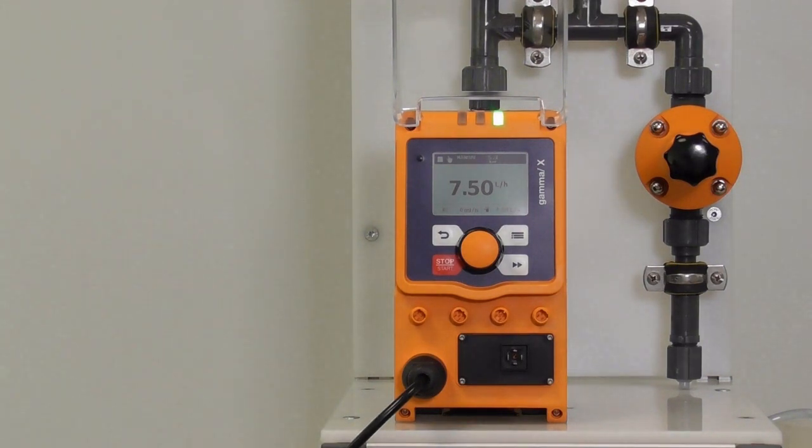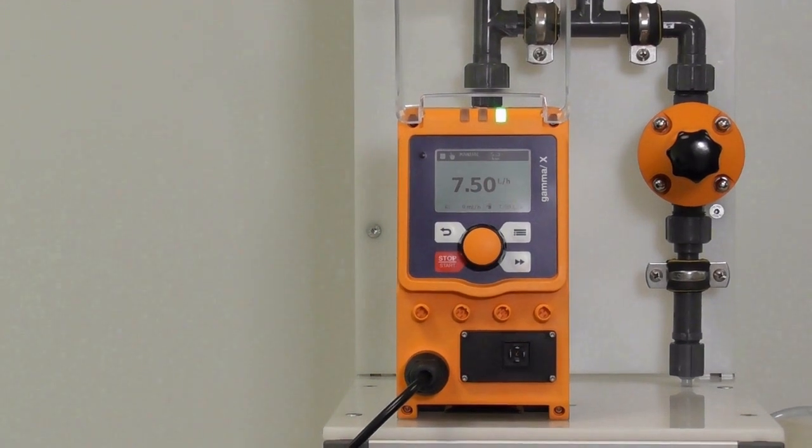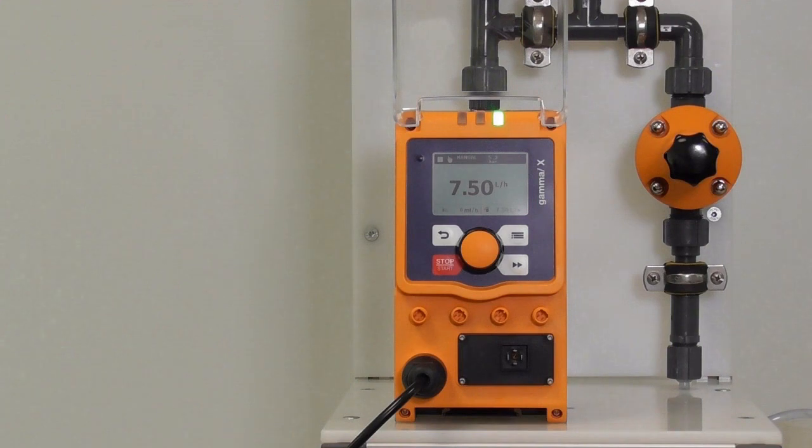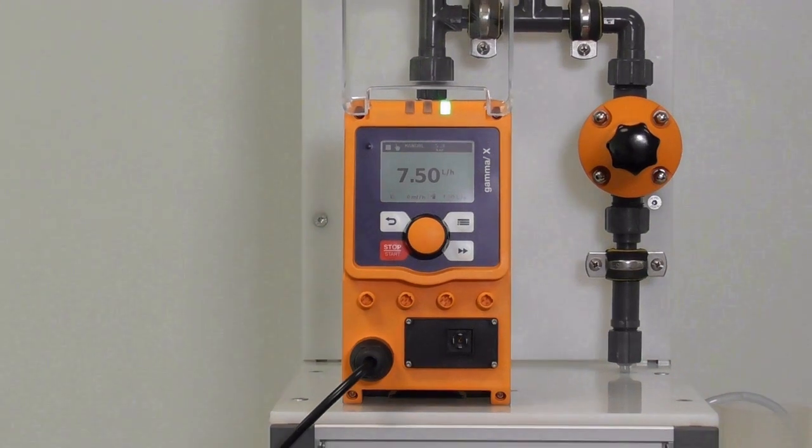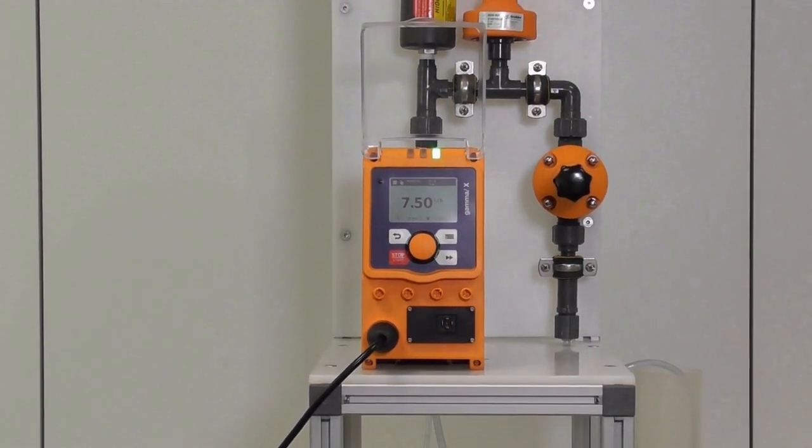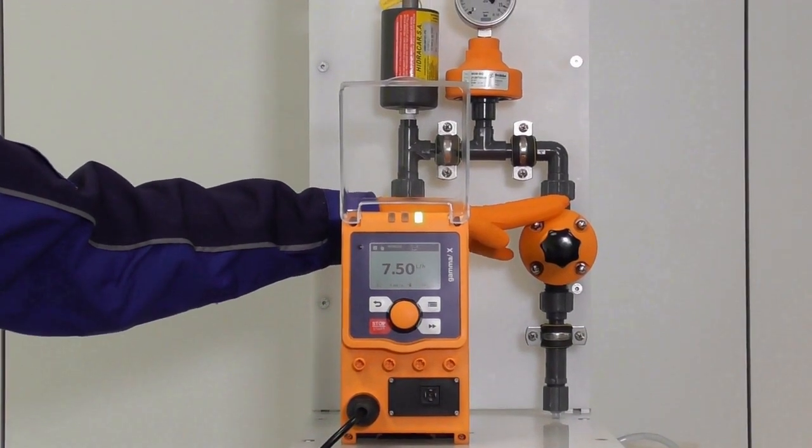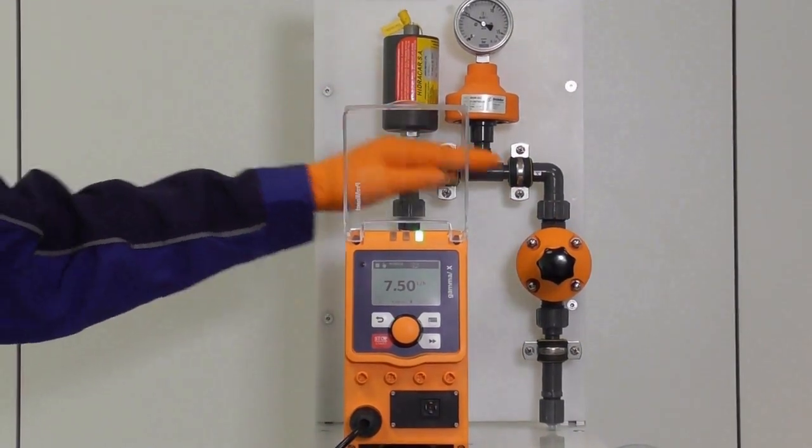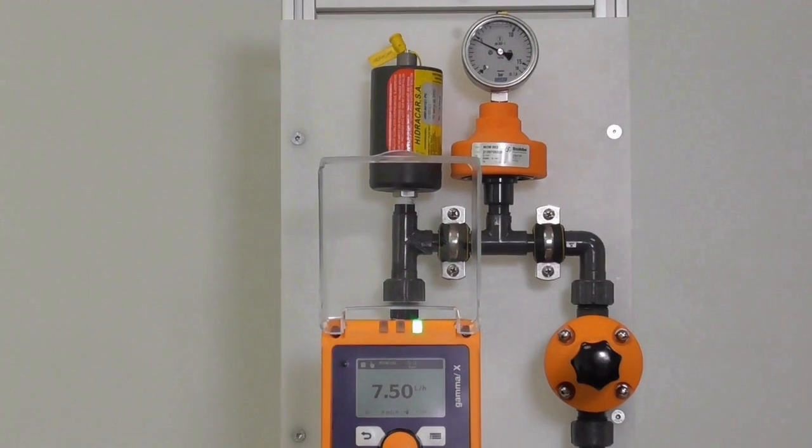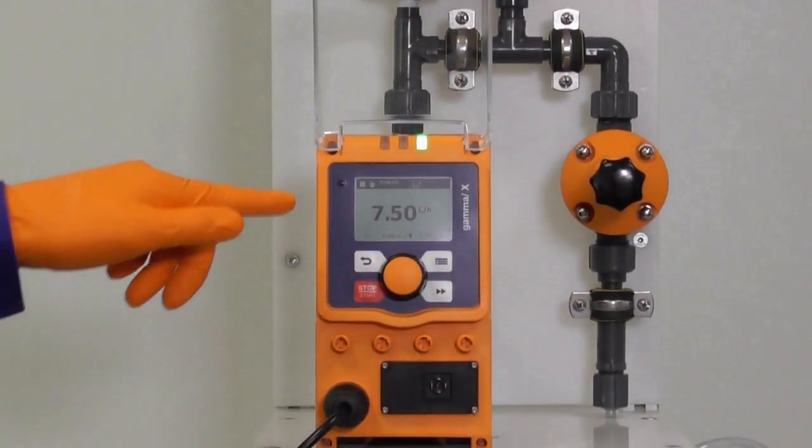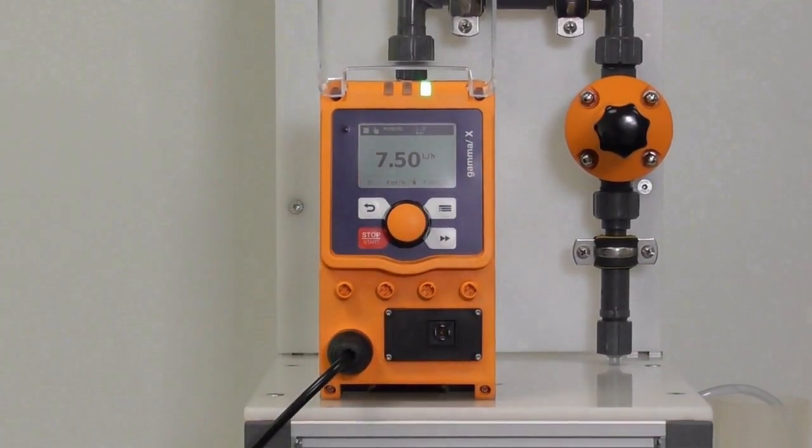When you do the calibration, it is really important to calibrate always from the suction side. So put a scale or a calibration vessel on the suction side and then you start a calibration process. This is very important because when you calibrate via the pressure side, you do not get such accurate values as you have things like a pulsation dampener or a back pressure valve, and these are causing bad dosing results.